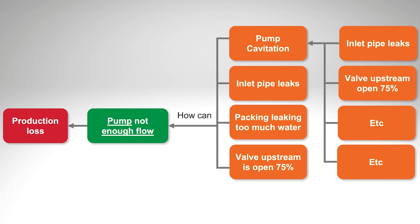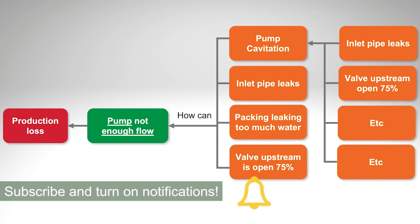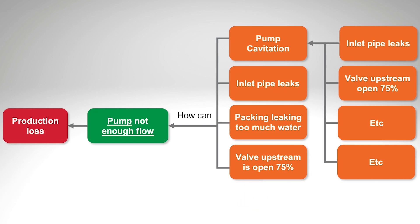Then I can take the other information — where do I put that? I put it as potential causes, not confirmed causes, but potential causes. So in the how-can diagram: pump cavitation could definitely cause the pump not to have enough flow; an inlet pipe leak could be a cause on its own without cavitation; packing leaking too much water is unlikely to cause that much loss, but it could; the valve upstream being open only 75% seems like an easy one to check. And continuing on — how can the pump cavitate? The inlet pipe leak could definitely do it, and the valve upstream being open only 75% can also cause cavitation. We don't have any other information pointing in another direction at this point.